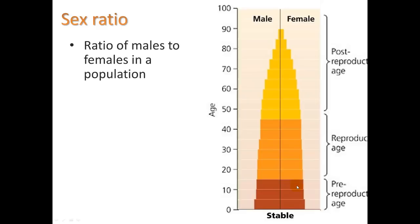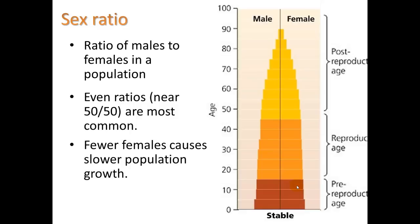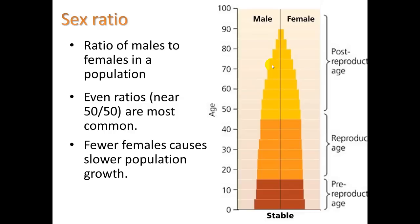Sex ratio means the ratio of males to females in the population, and even ratios near 50-50 are most common. In the older ages, females typically outlive males. It's important to note that if you see fewer females in an age structure diagram, that's going to cause slower population growth. We're looking at this mostly in the context of humans, but you could apply it to any population, like a fish population.